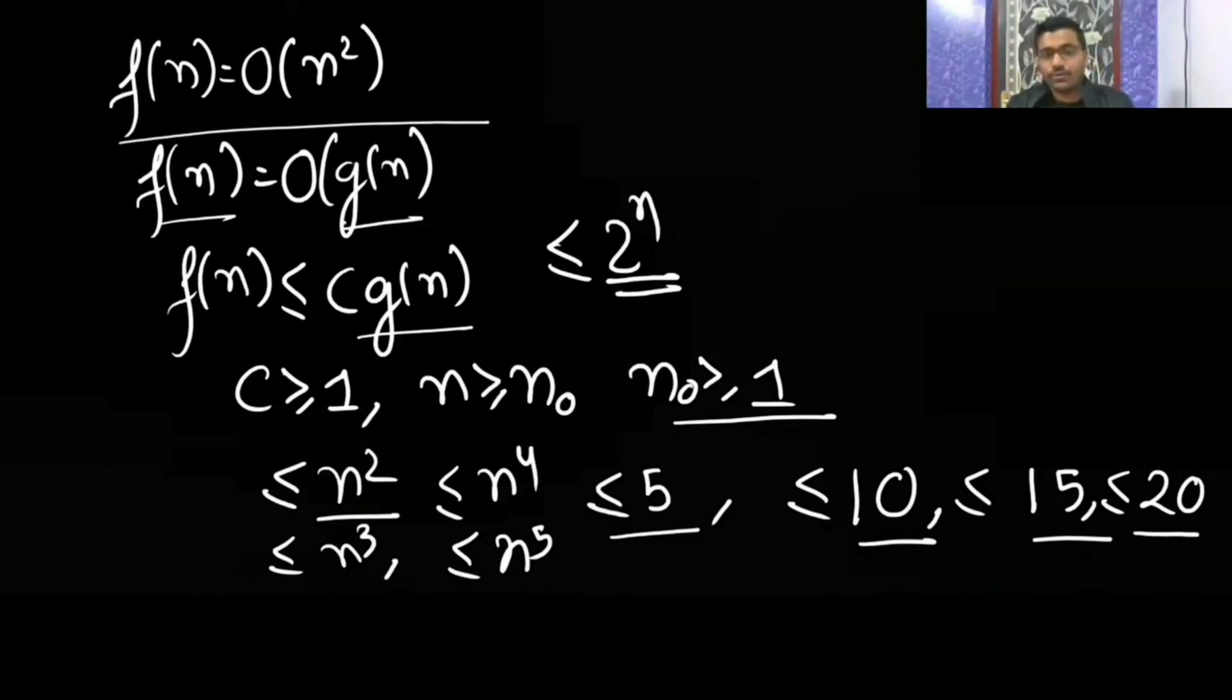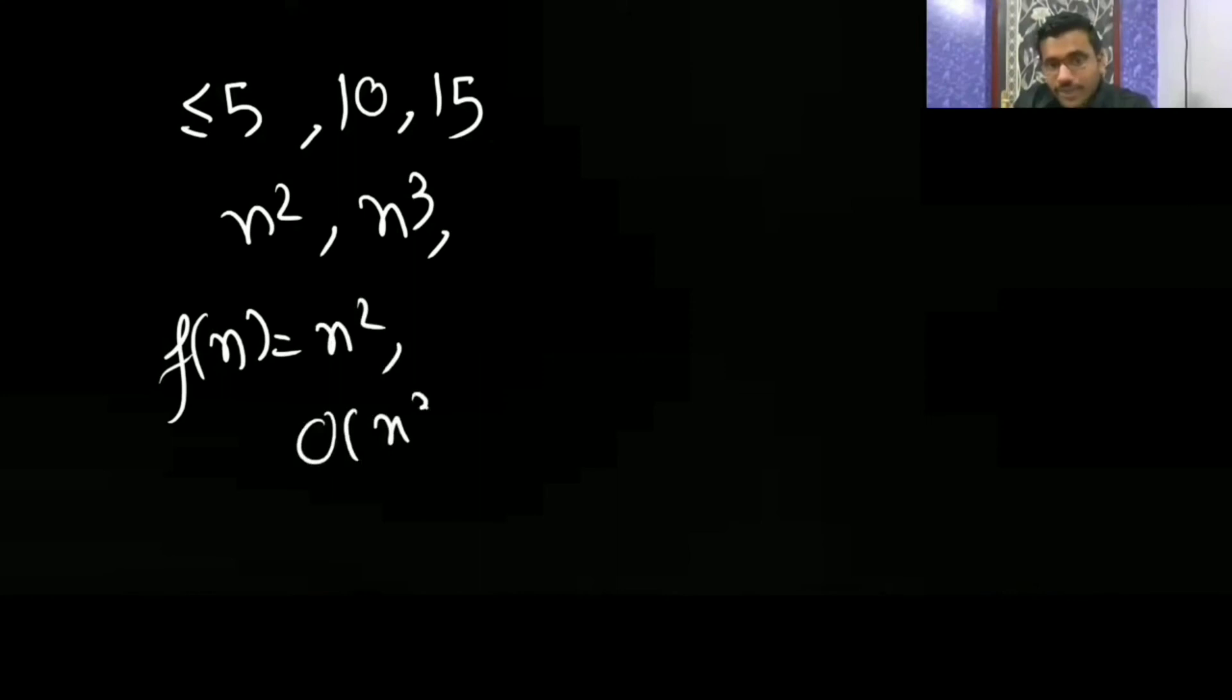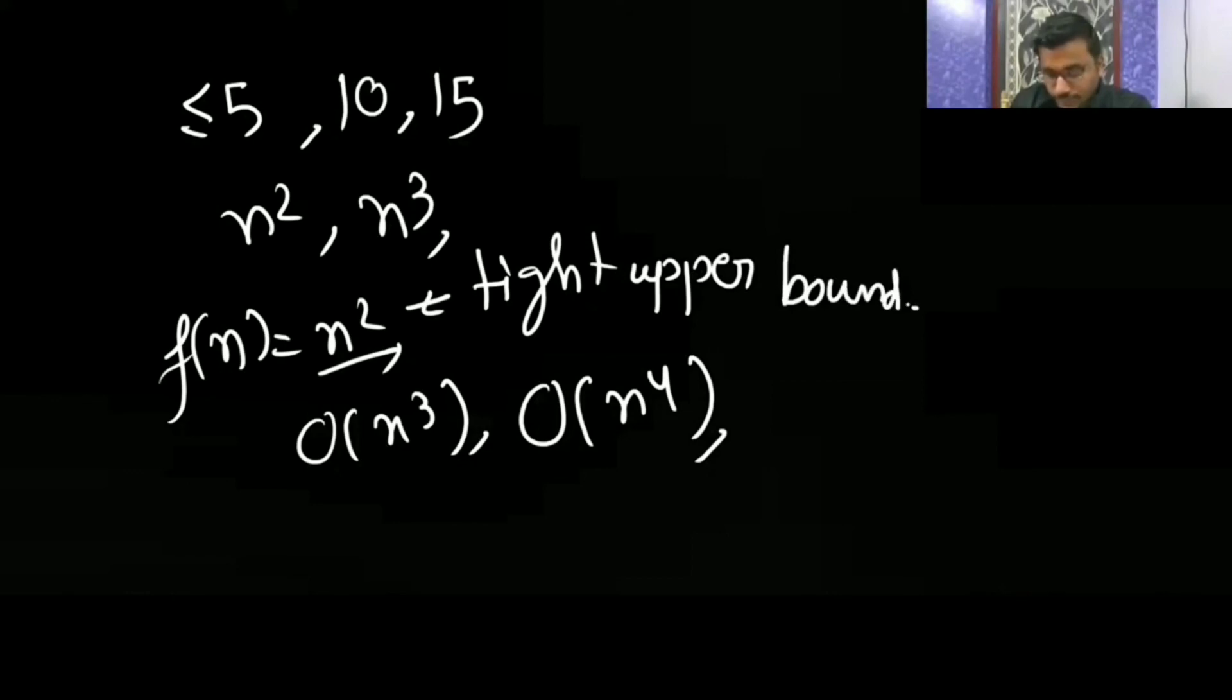If a function is less than 5, then it's also less than 10 and 15. If it's less than n², it's definitely less than n³. In the first class we learned that if f(n) is n², we can say the upper bound is n³ or n⁴, but this is called loose upper bound versus tight upper bound. I explained all this in the first class. Clear?